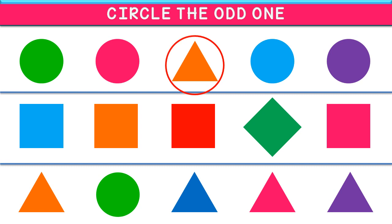Now, move to the second line. The first one is a square. The second one is also a square. The third one is also a square. The fourth one is a diamond shape. And the fifth one is also a square.